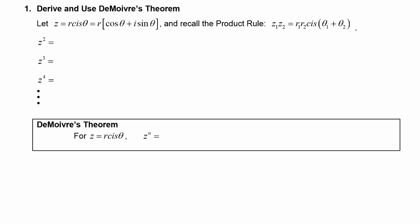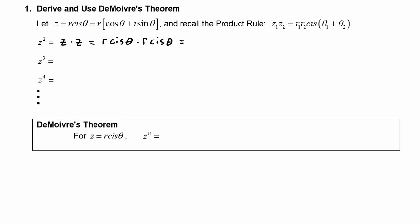We're going to use the product rule to help us get a rule about taking powers of complex numbers. Let's look at z squared — that means z times z, so that is r cis theta times r cis theta. The product rule says to multiply the two radii: r times r gives r squared. Then we take cis of the sum of the two angles, theta plus theta, which is two theta.